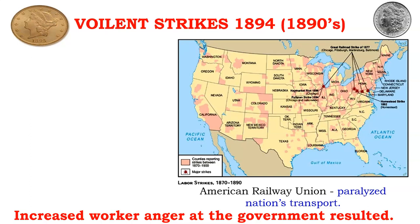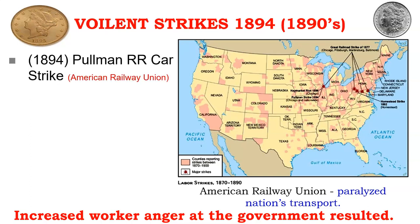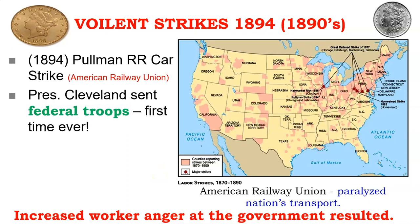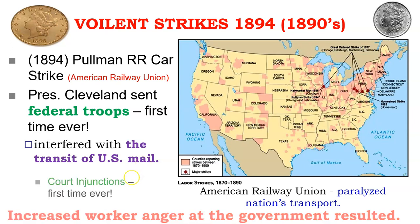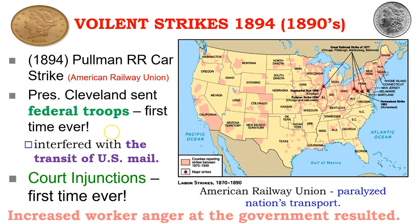The 1890s was not just about farmers. There were violent strikes across the entire country, and some were put down by the president and the military because they were seen as disrupting production. In 1894, during the panic, a shutdown of production would only make the economy worse. In particular, the Pullman railroad car strike was put down because it was seen as interfering with the United States mail — all mail moved on railroads. President Cleveland brought in federal troops. Courts passed injunctions saying strikes had to stop, creating more animosity toward the government — the feeling that it didn't care about the common person.